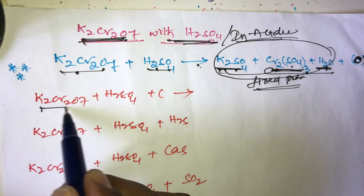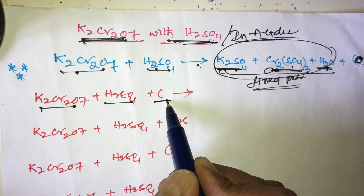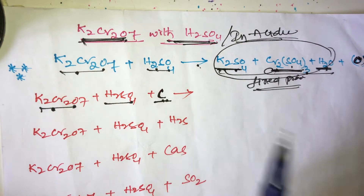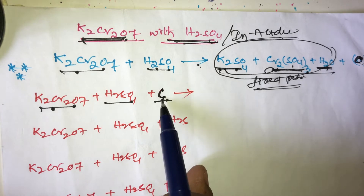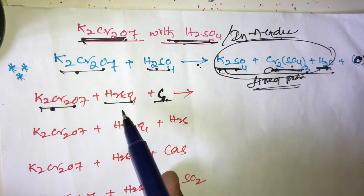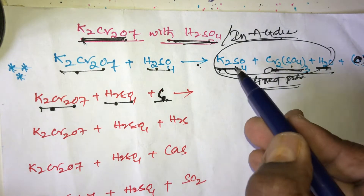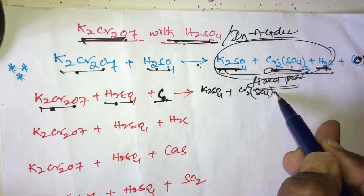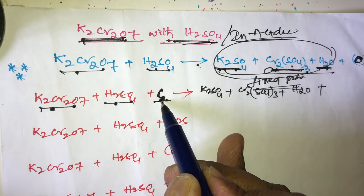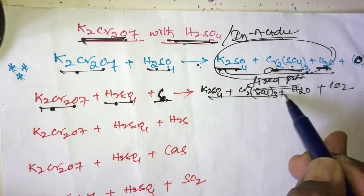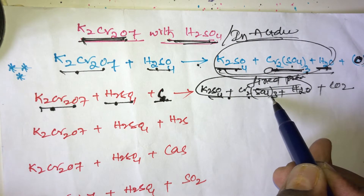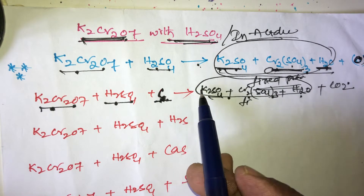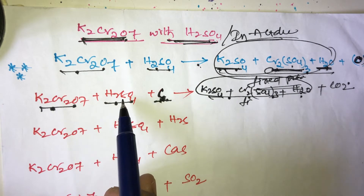Take the example: K2Cr2O7 plus H2SO4 plus carbon. Here, carbon is oxidized by K2Cr2O7 with H2SO4 and is converted into carbon dioxide. The fixed products are K2SO4 plus Cr2(SO4)3 plus water, plus carbon dioxide. So carbon on oxidation in the presence of K2Cr2O7 and H2SO4 gives carbon dioxide.